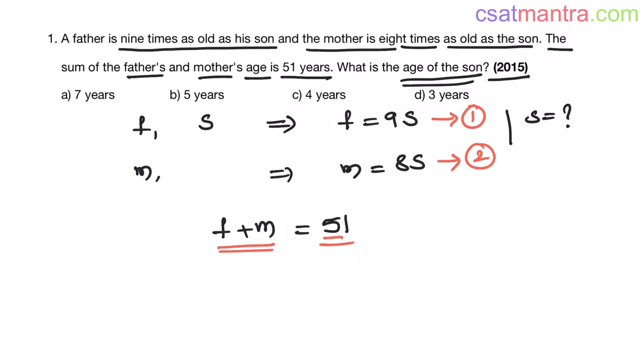So substituting their values in equation 3, f equals 9s, m equals 8s. This equals 51. So this is 17s equals 51. 17 threes are 51. That implies s equals 3.